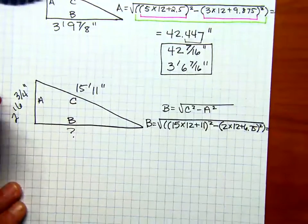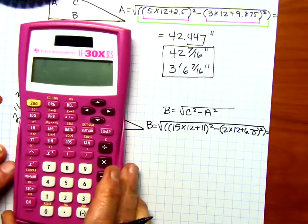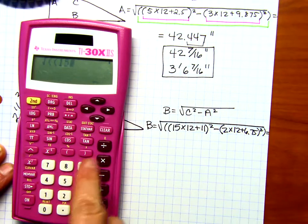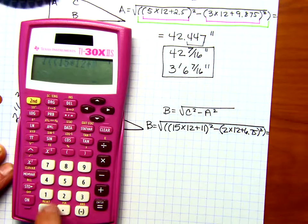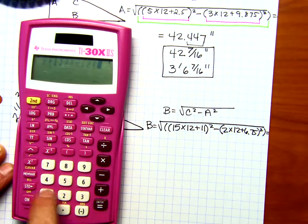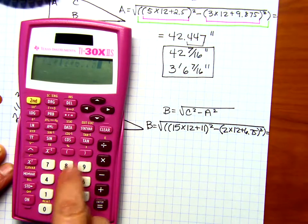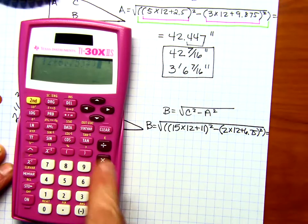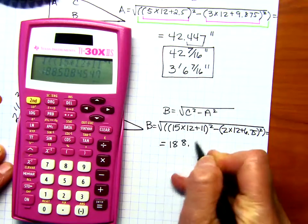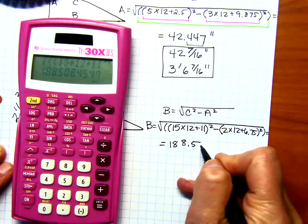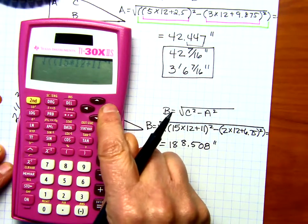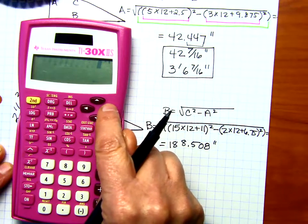All right, now we're going to get out the calculator, and hopefully I will punch everything in correctly. So, square root, open, 15 times 12 plus 11 close X2 minus, open, 2 times 12 plus 6.75 close X2 close equals. And I've got 188.5084, so that's going to be 508, that's in inches. I'm going to just double check with this arrow key, and it looks like I got it all. That's good.